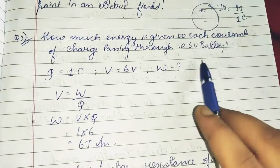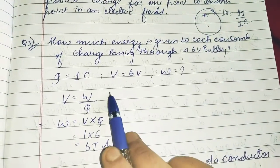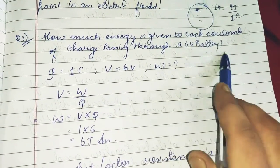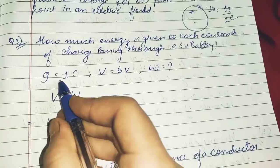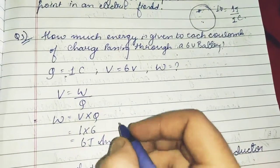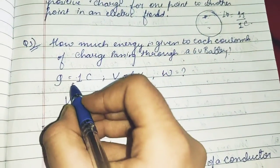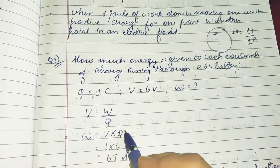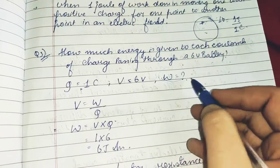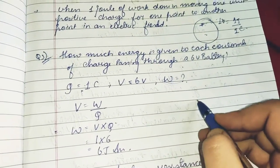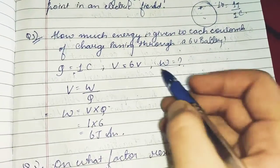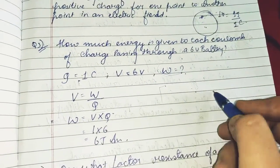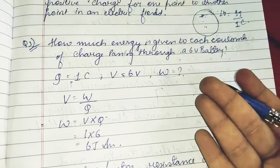How much energy is given to each coulomb of charge passing through a six volt battery? For numericals, first we have to write the given quantities, then write what we need to find, and then write the formula to be used. This makes a very presentable copy.